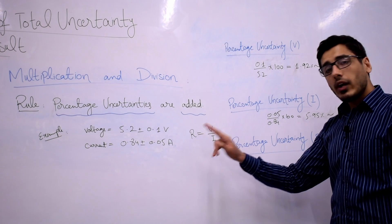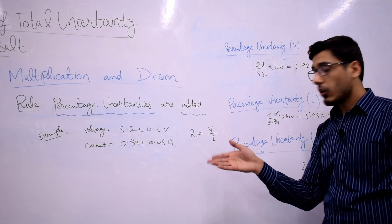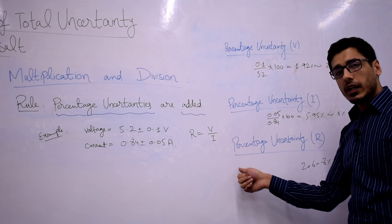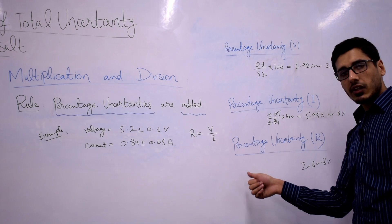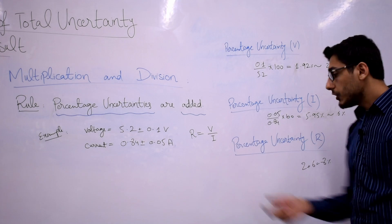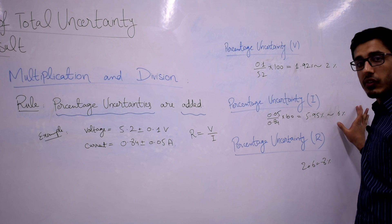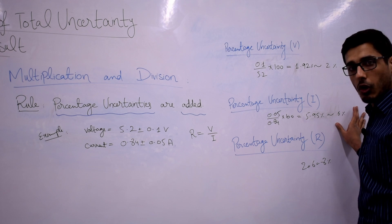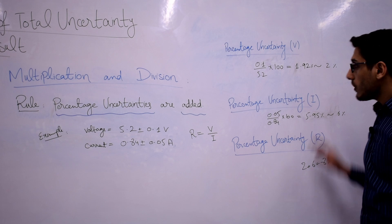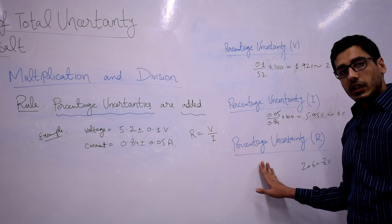Please note that in order to find the actual value of R I divide voltage by current using Ohm's law, but in order to find the percentage uncertainty in R I have to add them — because that's how the rule works. I cannot divide the percentage uncertainty in voltage by the percentage uncertainty in current, because that would be wrong. I need to add the percentage uncertainties for both parameters to get the percentage uncertainty in R.